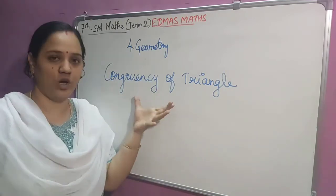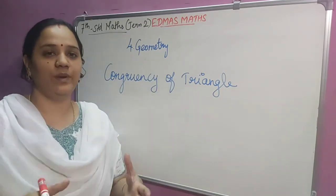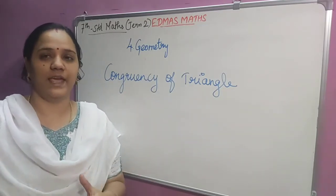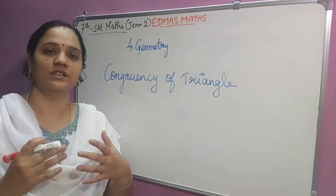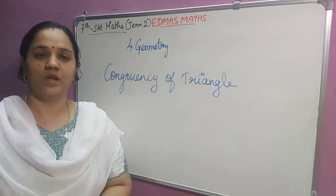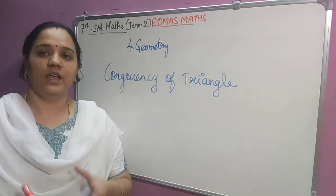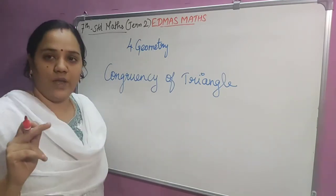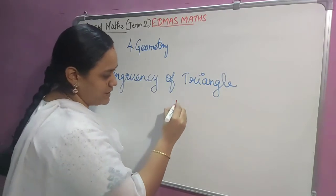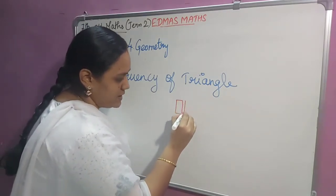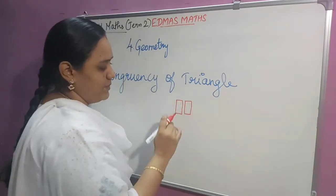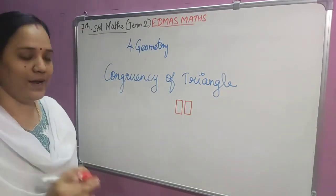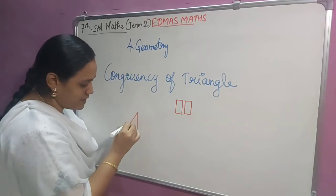Before going into this topic, you should know what is meant by congruence. The word congruence means exactly equal in size and shape. So in geometry, if two figures or objects are congruent, they have the same shape and size. For example, we can say these two shapes are congruent to each other, or if one has the same mirror image as the other.